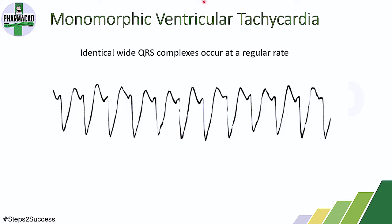Next is monomorphic ventricular tachycardia. In this, identical wide QRS waves appear at a regular rate. This is very important to understand — let's break down each term of the name.